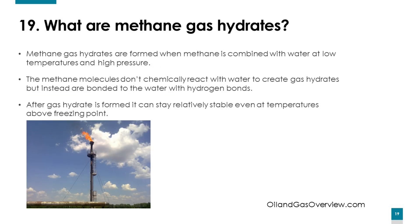What are methane gas hydrates? Methane gas hydrates are formed when methane is combined with water at low temperatures and high pressure. The methane molecules don't chemically react with water to create gas hydrates but instead are bonded to the water with hydrogen bonds. After a gas hydrate is formed, it can stay relatively stable even at higher temperatures and lower pressures.